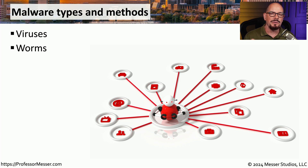With a virus, we can simply choose not to click on a particular link. With a worm, that malware can replicate itself without any type of human intervention.